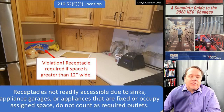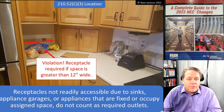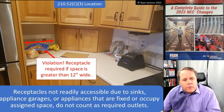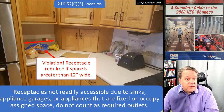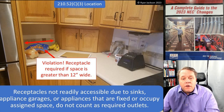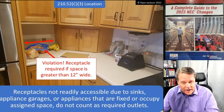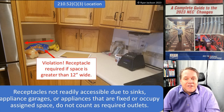Finally, 210.52C3 states that receptacles that are not readily accessible due to sinks, appliance garages, or fixed appliances occupying assigned space do not count as required outlets. In this photo, an appliance garage breaks the measurement — butt the tape into the ovens on the left, pull right, and if that countertop space exceeds 12 inches, a receptacle is required. One is needed on each side of the appliance garage, and it looks like behind the blender there is one on the right. Big changes in 210.52.